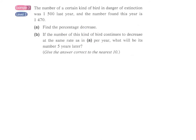Now let's look at Example 7. The number of a certain kind of bird in danger of extinction was 1500 last year, and the number found this year is 1470. Find the percentage decrease.